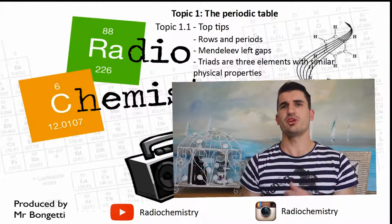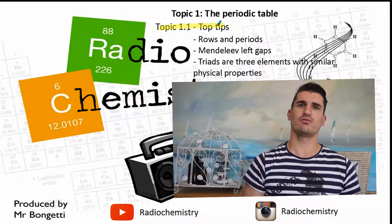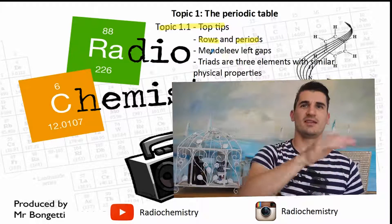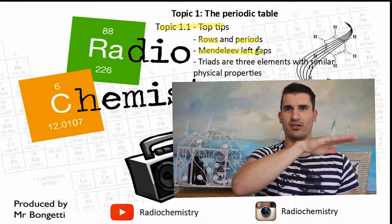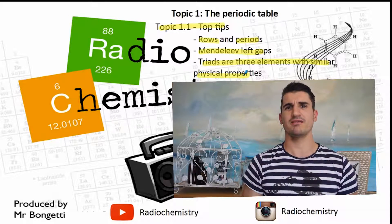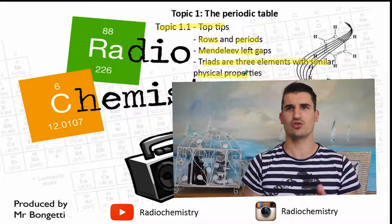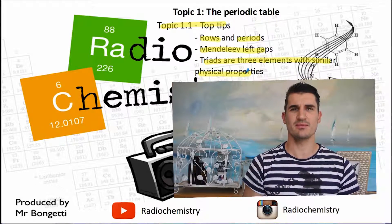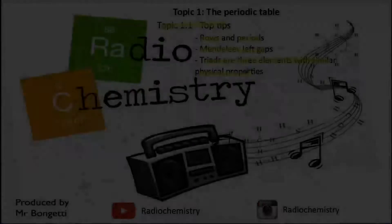Some top tips for this video: remember that the groups are the vertical columns and the periods are the horizontal rows. Remember that Mendeleev left gaps in his periodic table, and that triads are three elements with similar chemical and physical properties. Thanks for watching, Year 10s — drop a like on the video, subscribe for more, and I'll see you next time.